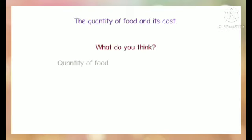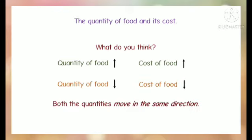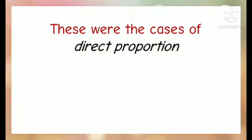The quantity of food and its cost: when the quantity of food increases, the cost of food increases; when the quantity of food decreases, the cost of food decreases. Both quantities move in the same direction. These were all cases of direct proportion.